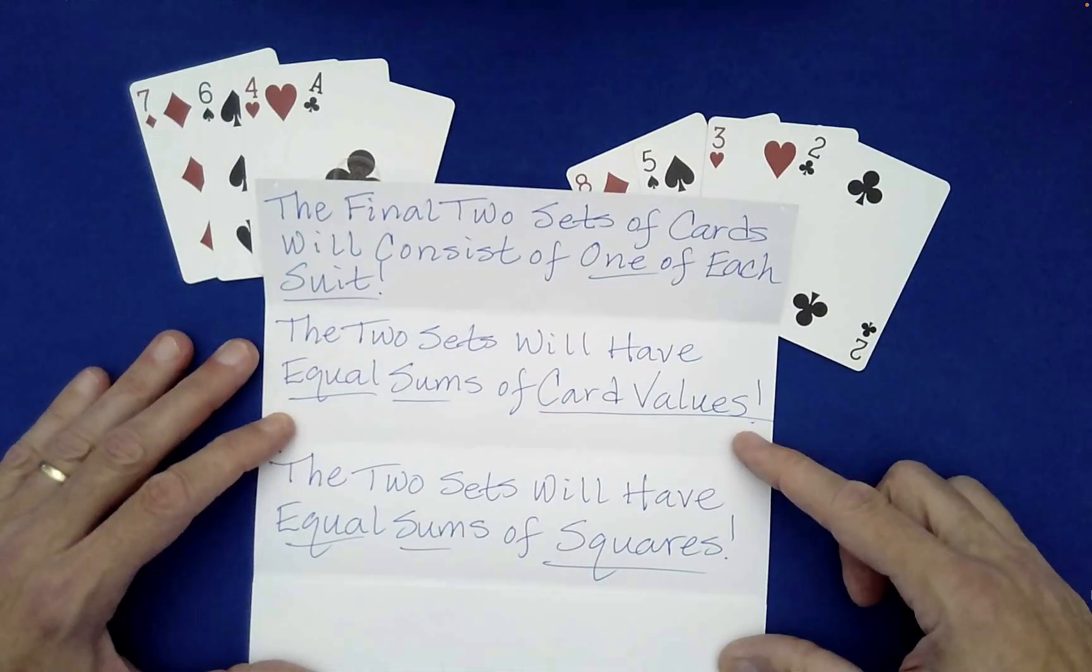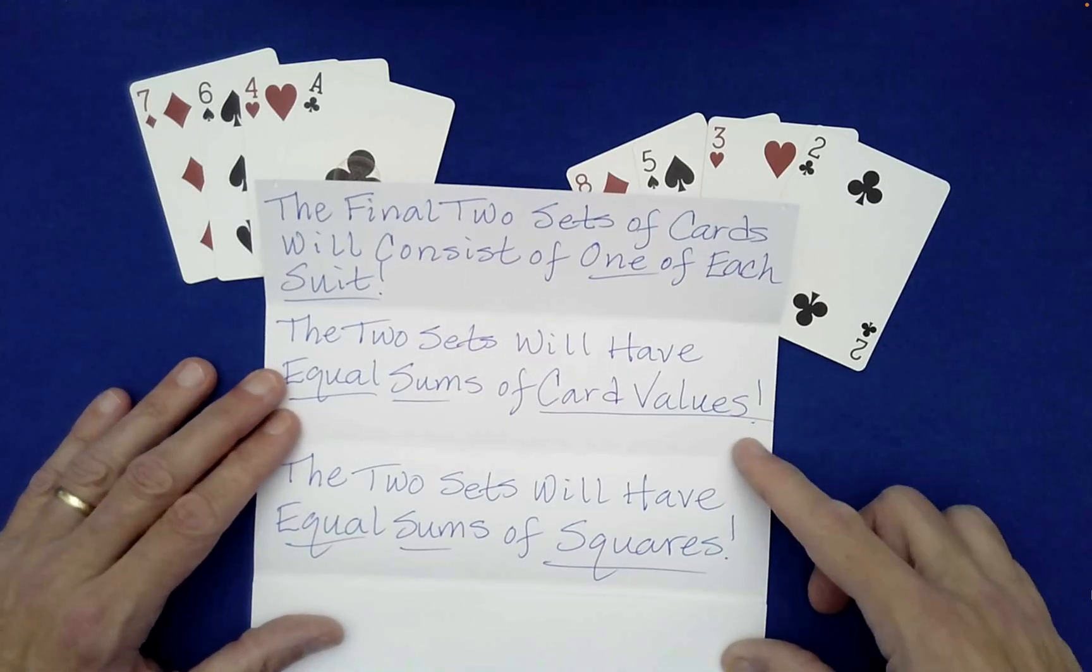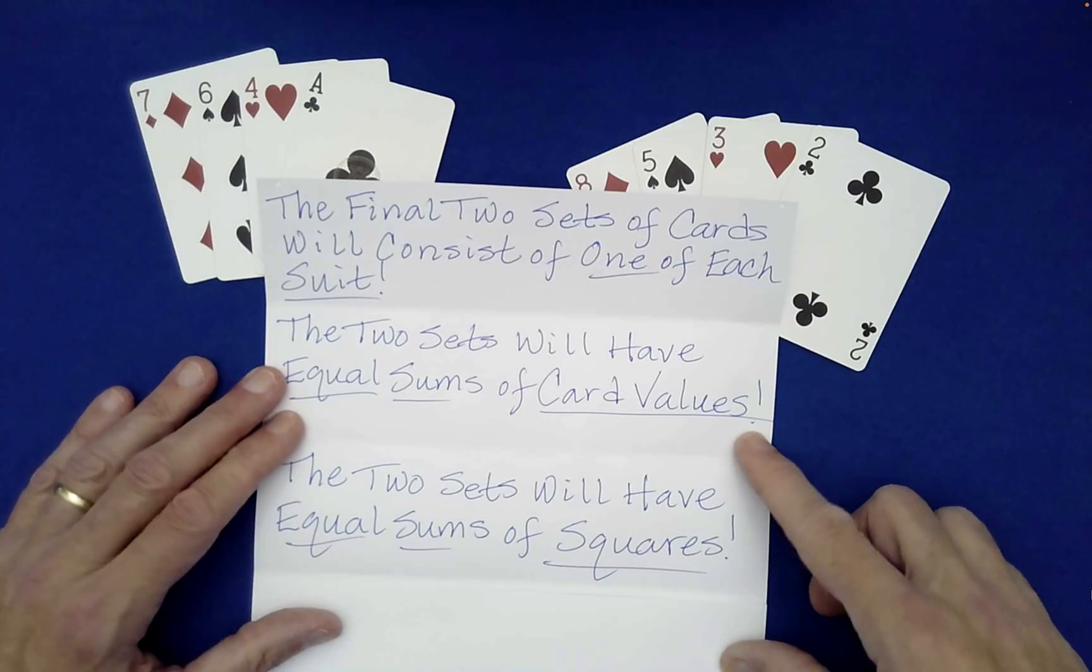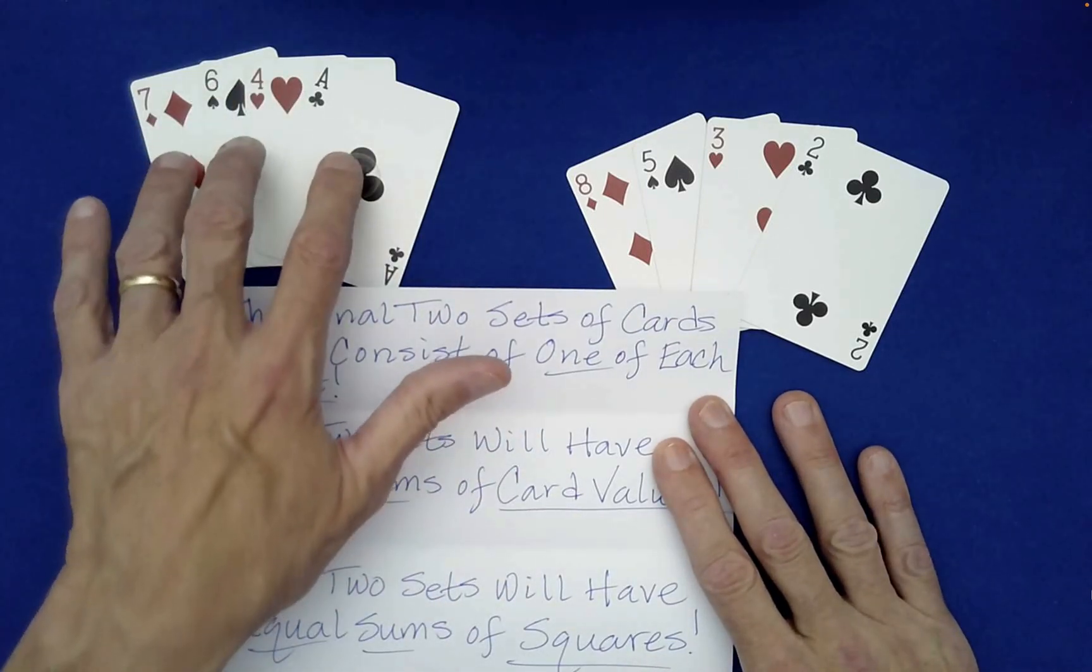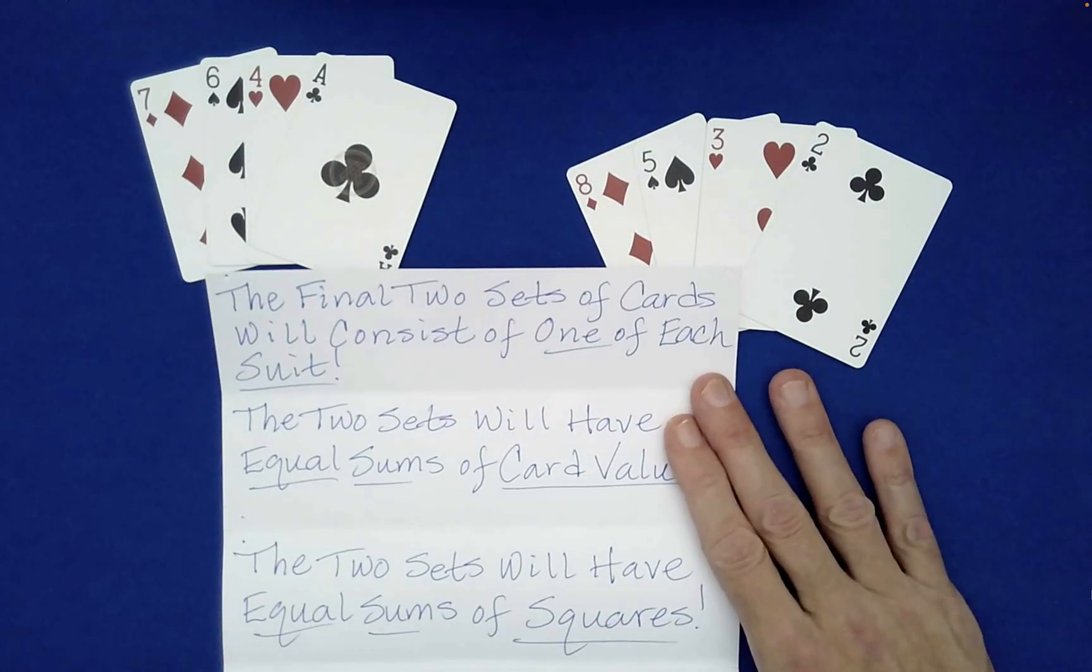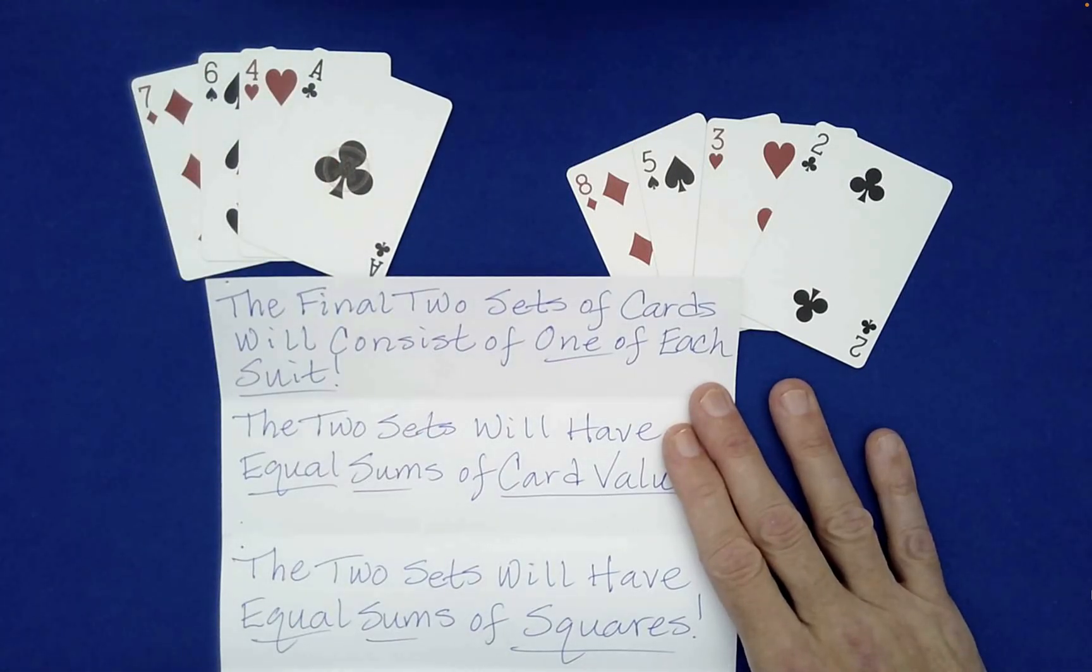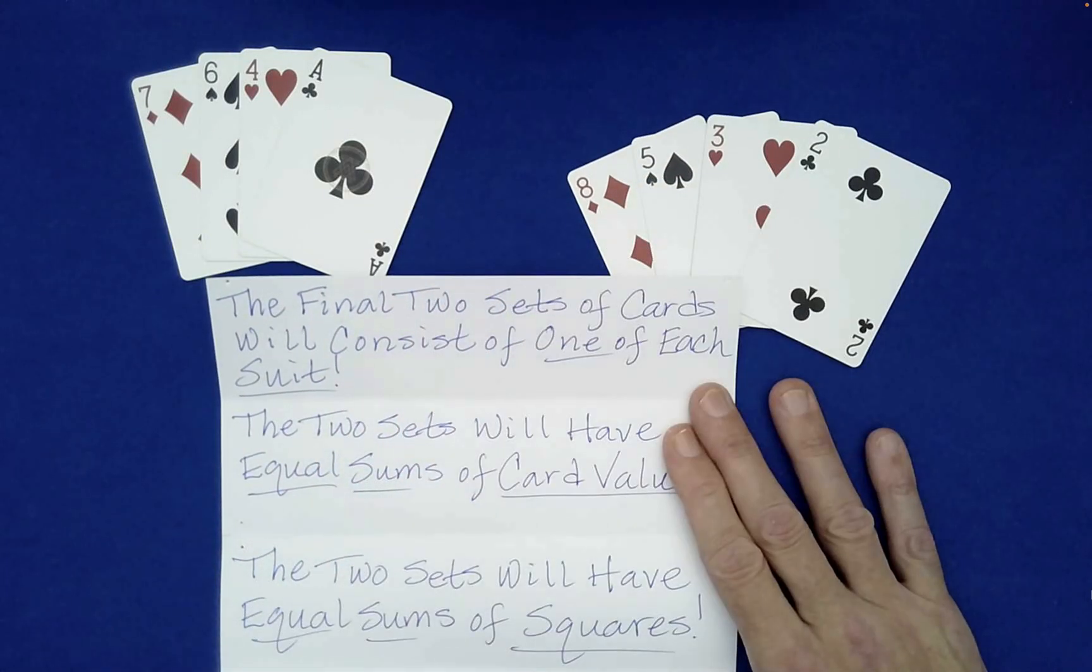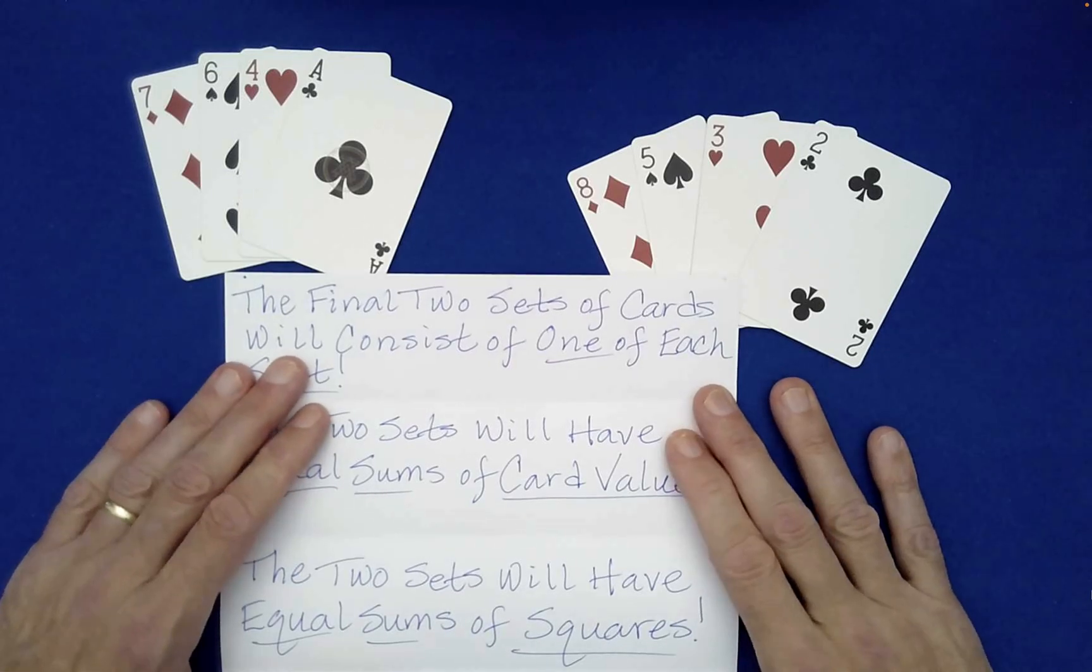What about the third part? The two sets will have equal sums of squares. I'm not sure if you know what that means, but for a number theorist, they would know exactly what that means. So let me explain what that means.